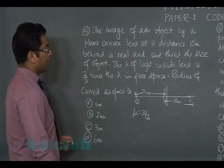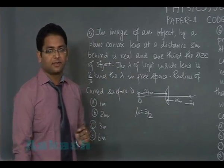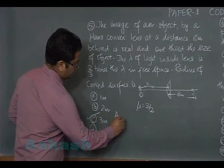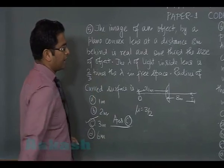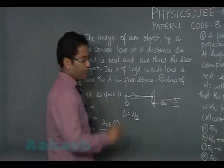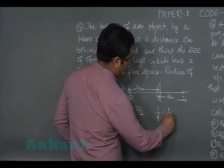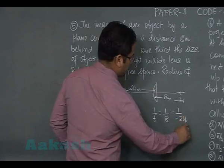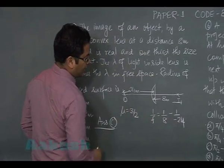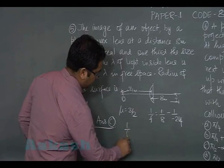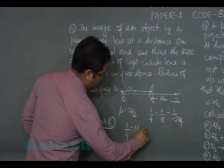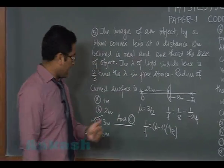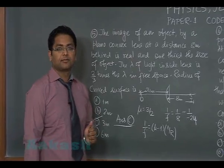We have to find the radius of the curved surface. This one will give us option number C. It can be calculated in this way: 1 by F is 1 by V minus 1 by U. You calculate the focal length, and once you calculate the focal length you can also use 1 by F equals to mu minus 1 into 1 by R. You'll be getting the value of radius as 3 meters.